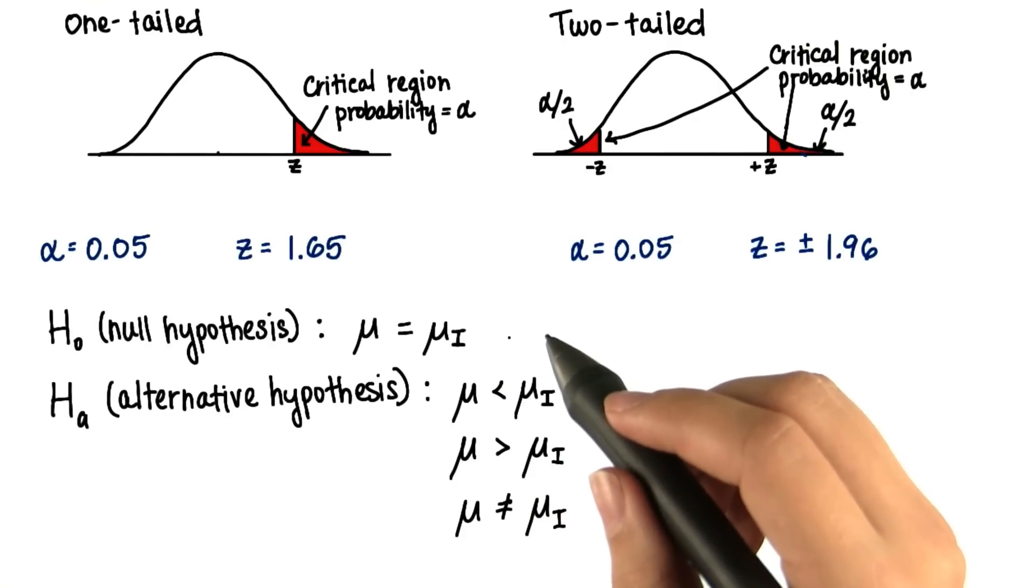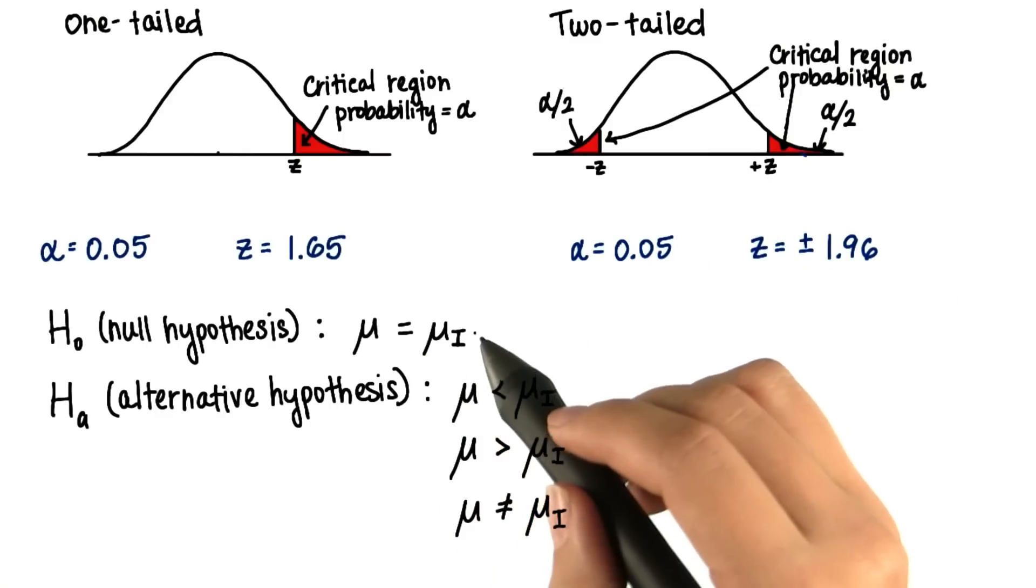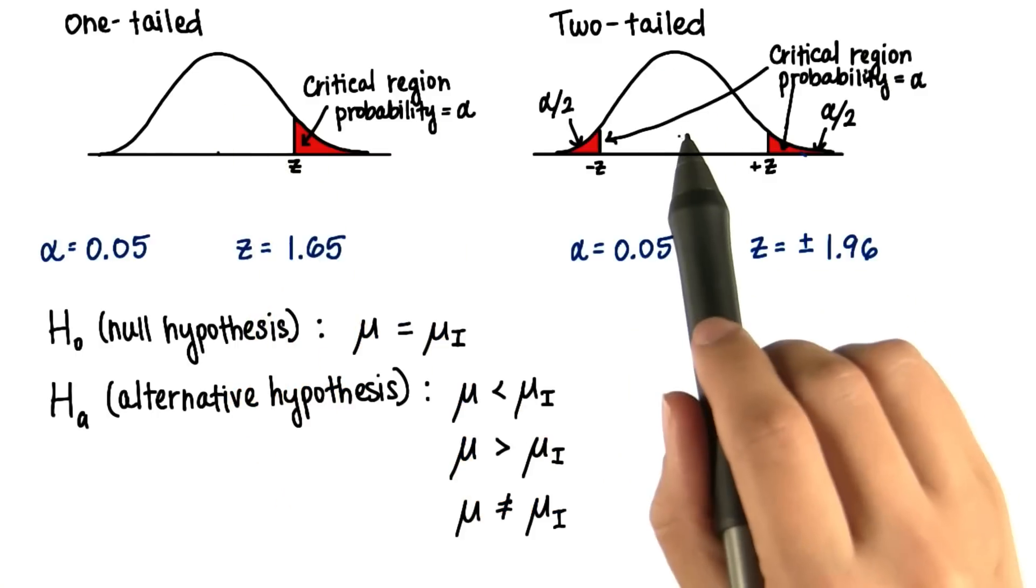For the null hypothesis, when we're guessing that there's no significant difference between these two parameters, our sample mean will lie somewhere outside the critical region, in this white space.